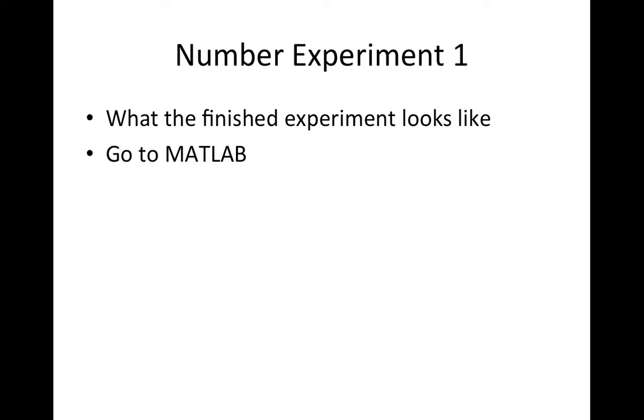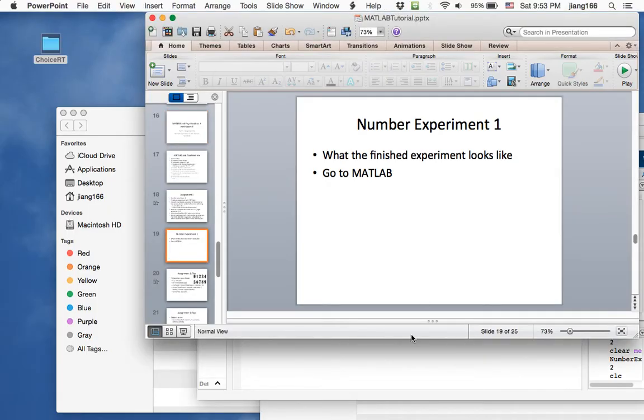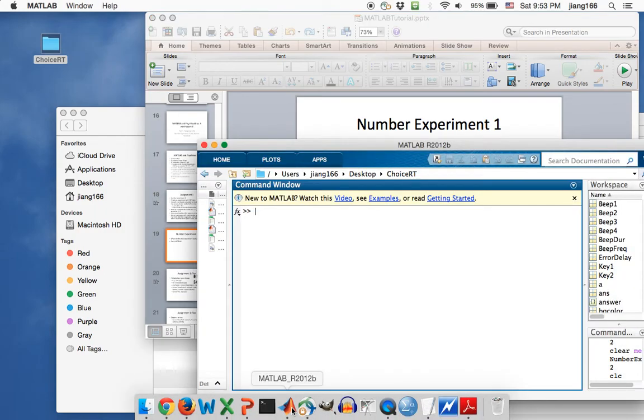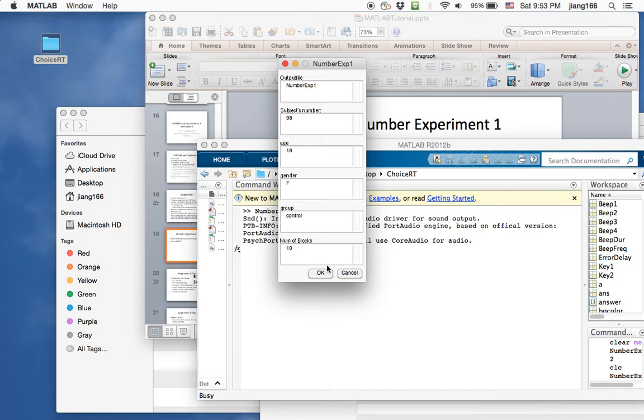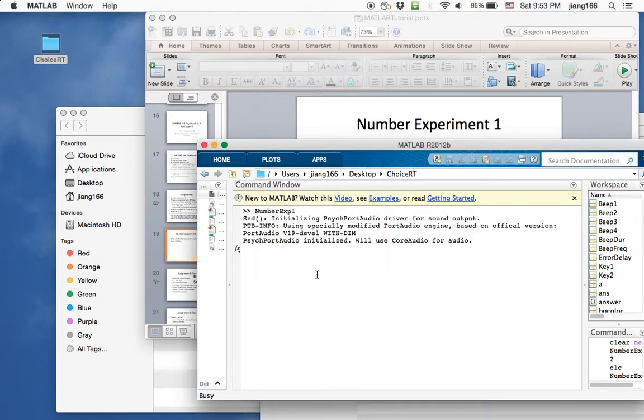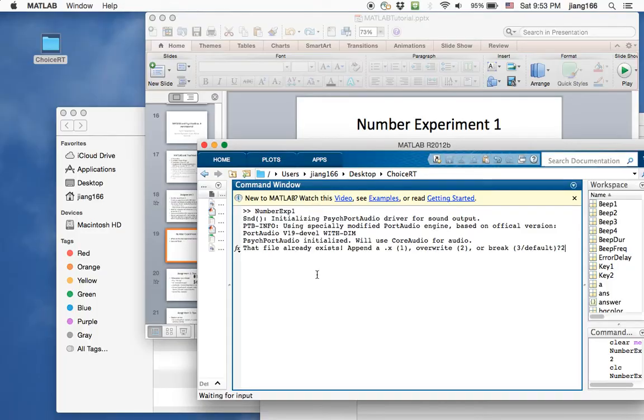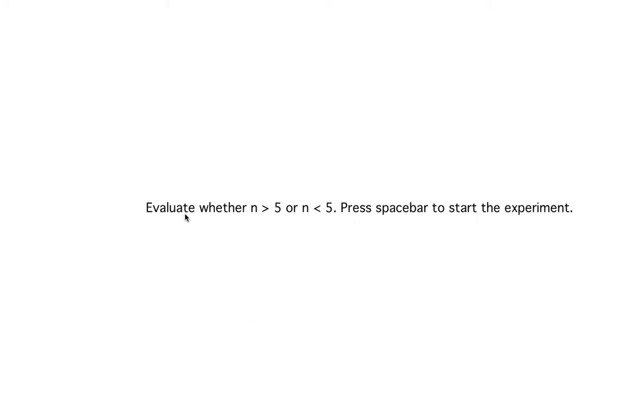Now, I would like to show you what a finished experiment looks like to give you an idea about what this assignment is. So I'm going to go to MATLAB. I've written this experiment. As you can see, it uses the same kinds of prompts to present participants with stimuli. At the beginning, there is just a very simple instruction that tells the participants that they should evaluate whether the number shown to them is greater or less than 5. And I'm going to press the space bar to start.